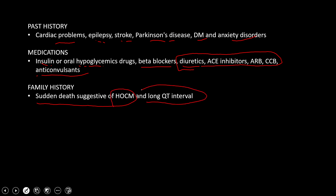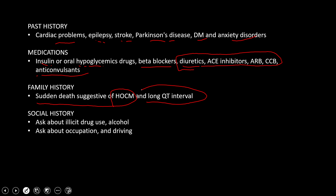Family history should include sudden cardiac death in the family, HOCM, or long QT syndrome. We also ask about illicit drug use and alcohol use. Occupation is important — whether the patient is prone to injury if they collapse at the workplace. Driving is particularly important: collapse while driving is very dangerous and we should inform the licensing authorities.